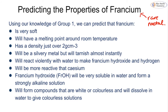We would predict that francium is soft, has a melting point around room temperature, and a density just over 2 g/cm³. It will be a silvery metal but will tarnish instantly when cut. It will react extremely violently to produce francium hydroxide and hydrogen, and will be more reactive than cesium. Francium hydroxide would be very soluble, forming a strongly alkaline solution, and its compounds would be white or colorless, dissolving in water to give colorless solutions.